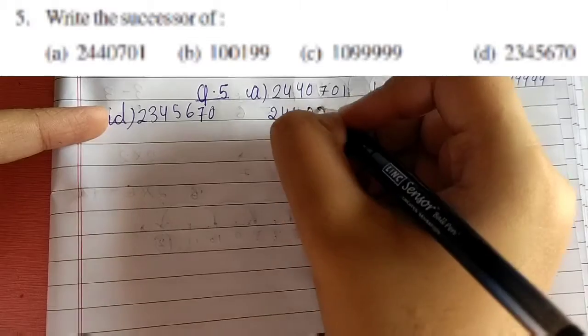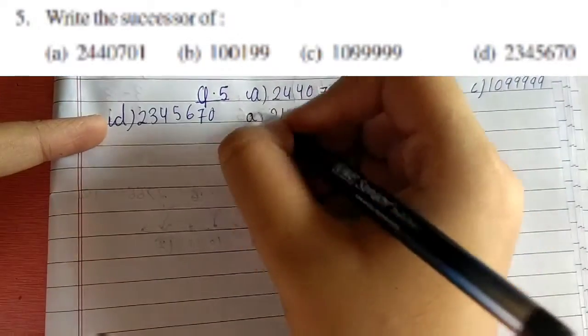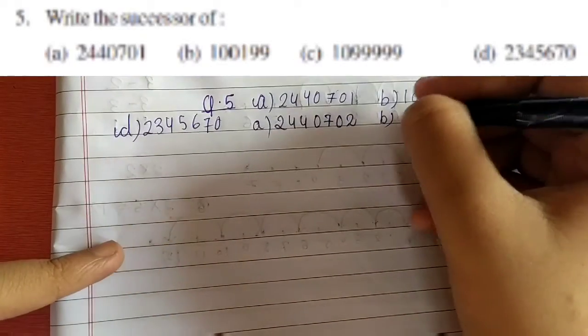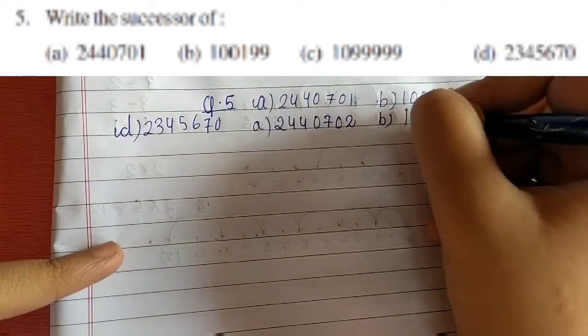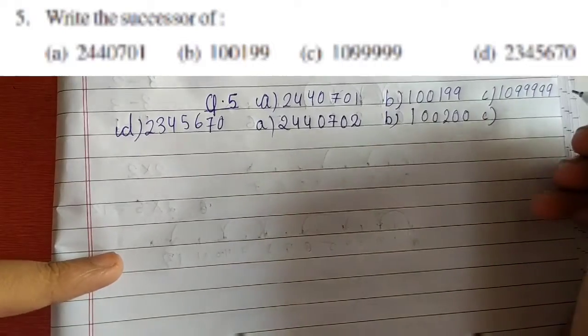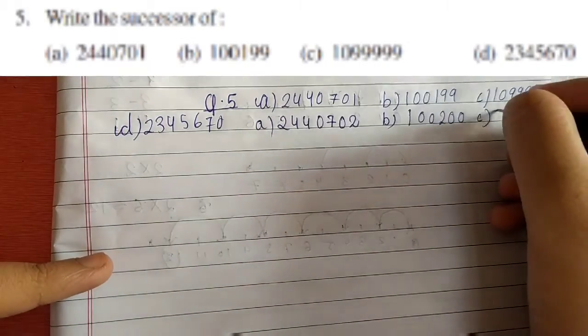Now for part (b), 1 lakh 199, you have to just add 1 to get 1 lakh 200. Then we have part (c), 1099999. This will become 11 lakh (1100000).